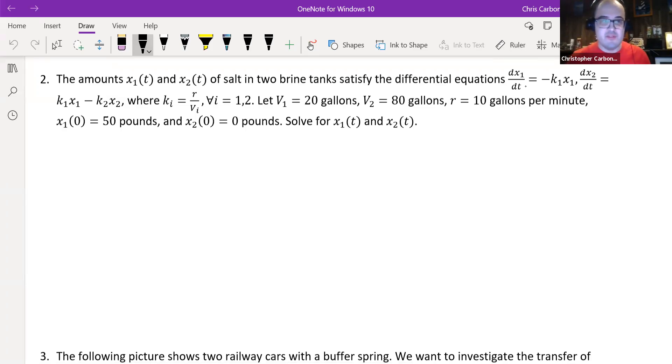Our next question, question number two, is the amounts x₁(t) and x₂(t) of salt in two brine tanks satisfy the differential equations: the derivative of x₁ with respect to t is negative k₁ times x₁, and the derivative of x₂ with respect to t equals k₁ times x₁ minus k₂ times x₂, where kᵢ equals r divided by vᵢ for every i, being either one or two in this case.